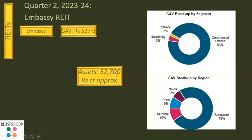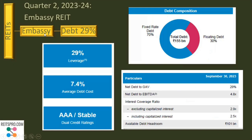The gross asset value of Embassy REIT is approximately Rs 52,700 crores, broken up by segment and by region in the chart below. There is a heavy concentration of Embassy REIT assets in Bangalore, and 93% is commercial office space, which is why it is an office REIT. The debt portion is 29% LTV, with 70% fixed rate and 30% floating rate debt, making it somewhat insulated against interest rate fluctuations. The average cost of debt is 7.4%, of which 70% is fixed.